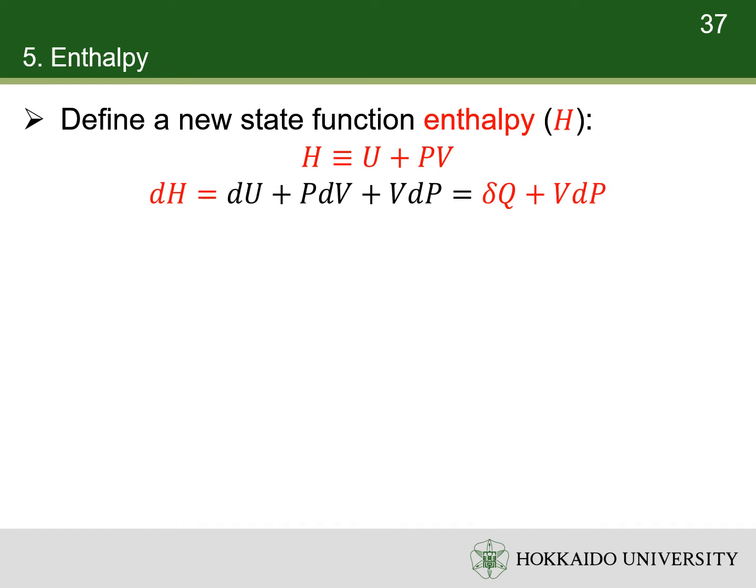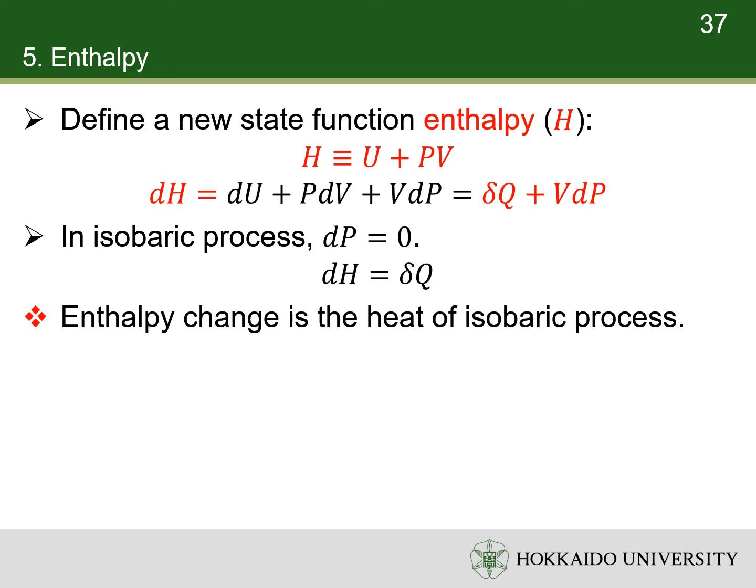The differential form of enthalpy is shown below. According to the first law of thermodynamics, the first two terms represent heat. In an isobaric process, dp is zero, so the change of enthalpy is the heat.